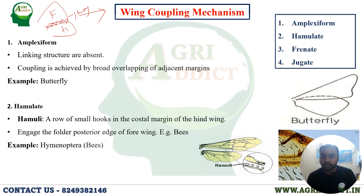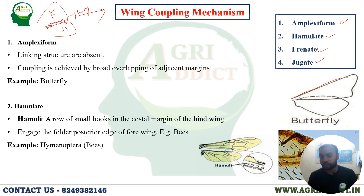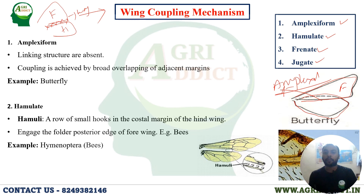There are four different types of wing coupling mechanisms: amplexiform, hamulate, frenate, and jugate. Amplexiform means there is no linking structure — no coupling, but it looks like coupling. It is simply an overlapping. In the wings of the butterfly, the forewing and hindwing are just overlapped by each other without any linking structures. This overlapping is called amplexiform. The example is the butterfly, and the linking structure is absent.